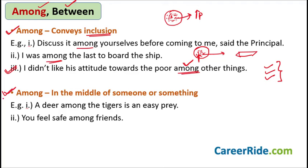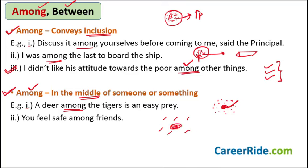Whenever you want to convey that something is in the middle of someone or something, you mean 'among.' 'A deer among the tigers is an easy prey' — the deer is in the middle of a group of tigers. 'You feel safe among friends' — you are among your friends, you are between the people who are known to you. Now, we use 'among' when we want to divide or distribute something and there are more than two people or things to take it.